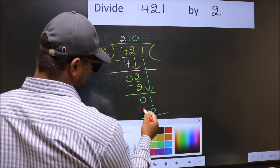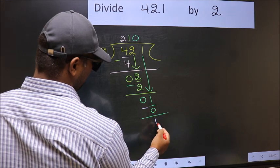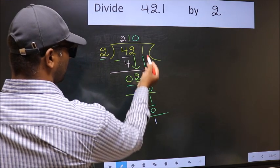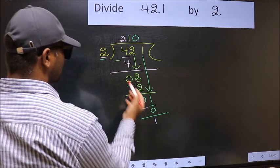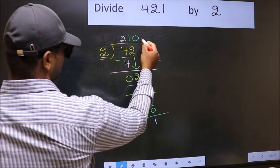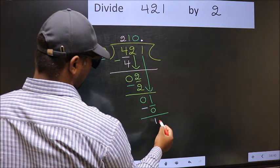Now you subtract. 1 minus 0, 1. Over here, we did not bring any number down. And 1 is smaller than 2. So now you put a dot and take 0.